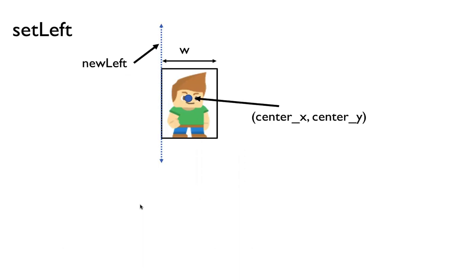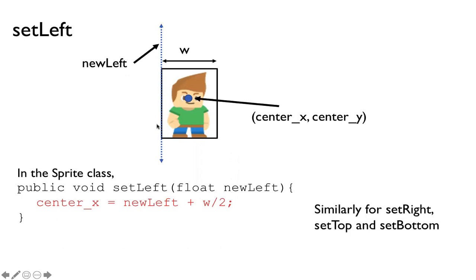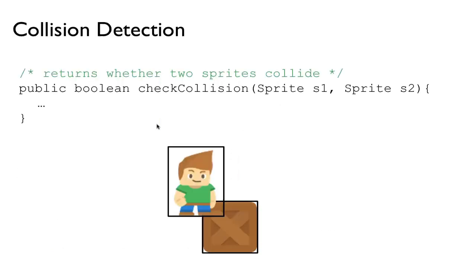These mutators are straightforward. For setLeft, I want to set the left side of the sprite to be equal to a new left value. The setLeft mutator method has a parameter called newLeft. To set the sprite at that position, we make centerX equal to newLeft plus width over 2. By doing this, we set the sprite at a position where the left side equals newLeft. In the same way we can do setRight, setTop, setBottom, etc.